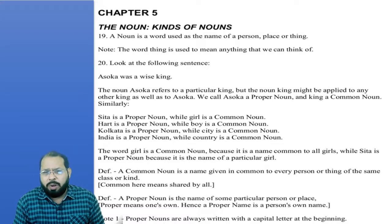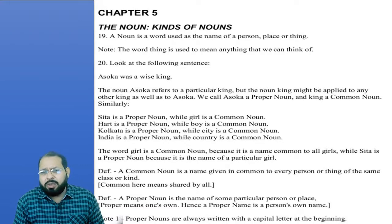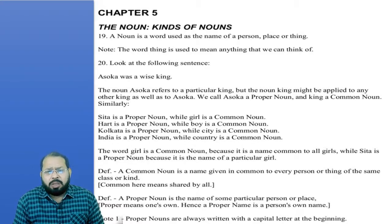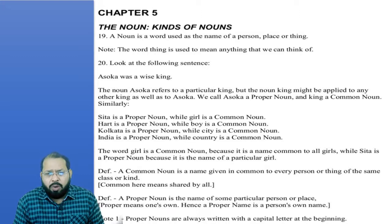We call Ashoka a proper noun, while 'king' is a common noun. Similarly, Sita is a proper noun, while 'girl' is a common noun. The word 'girl' is a common noun because it is common to all girls. A noun given in common to every person or thing of the same class is a common noun.